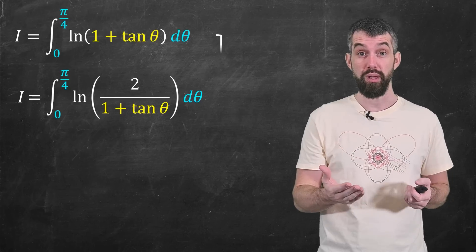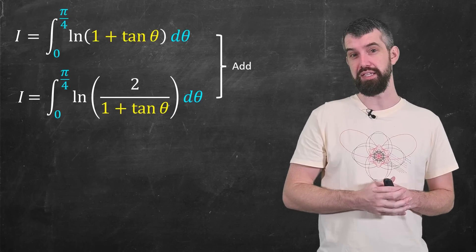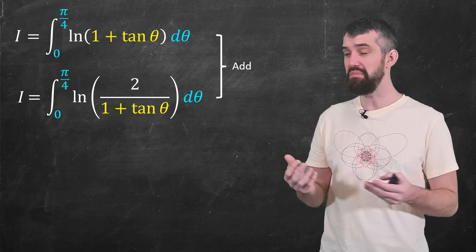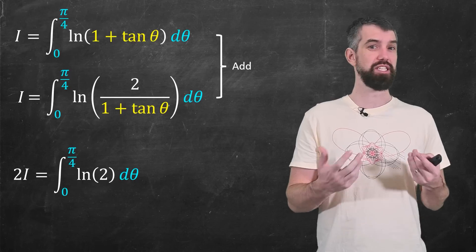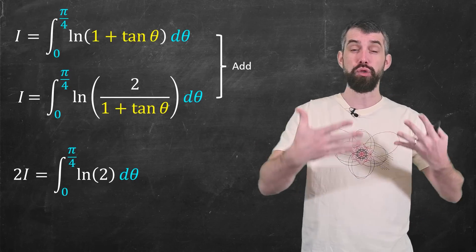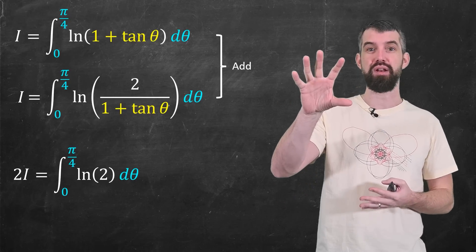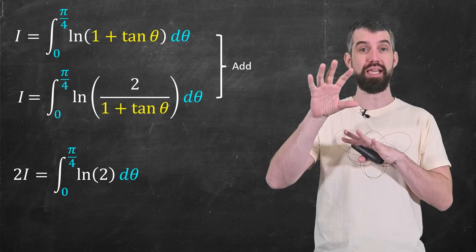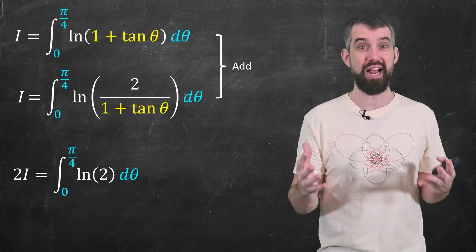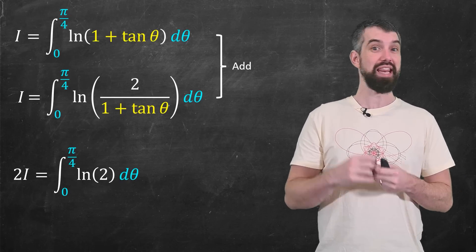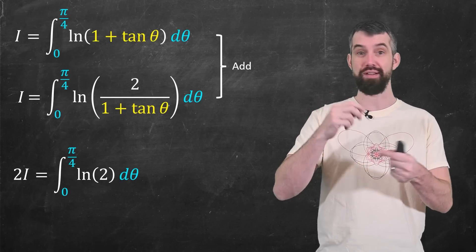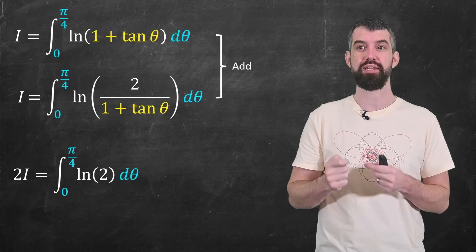So for example, what if I try adding these together? If I do that, it cleans up incredibly nicely. And this is because the sum of two logarithms is the logarithm of the product. So the 1 plus tangent of theta on the top and the 1 plus tan theta on the bottom, they cancel. All that's left over is now the logarithm of the 2.